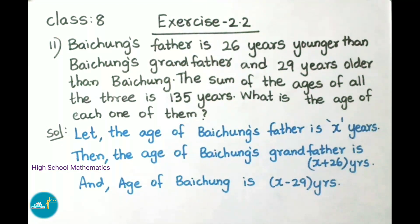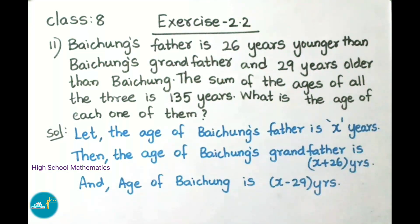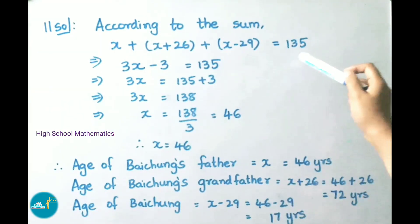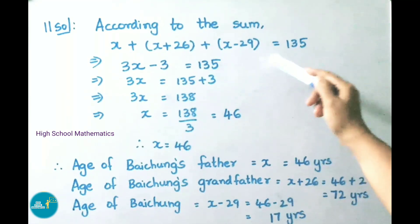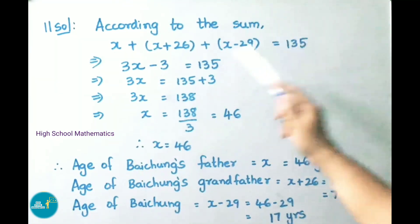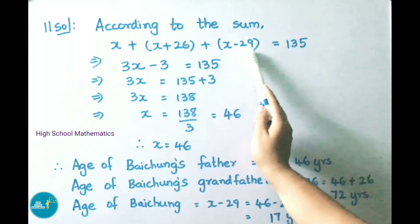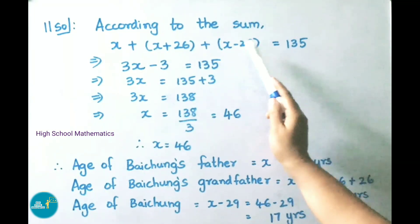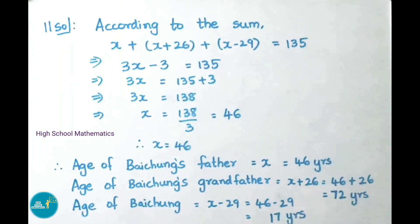According to the sum, the sum of ages of all three is 135 years. So x plus (x plus 26) plus (x minus 29) equals 135. Combining: 3x plus 26 minus 29, which gives 3x minus 3, equals 135.